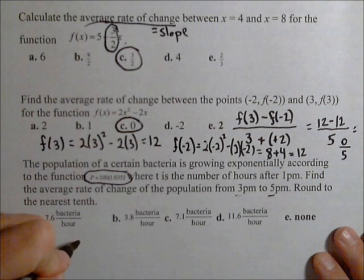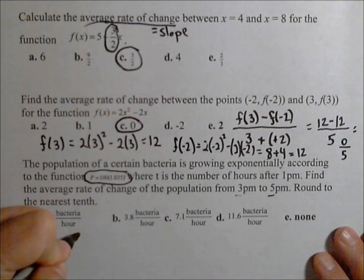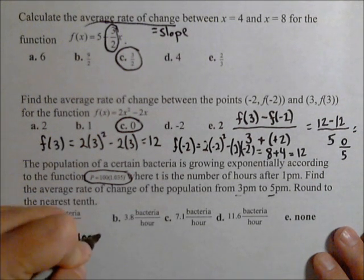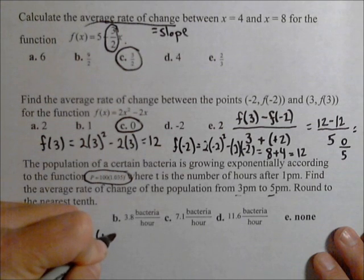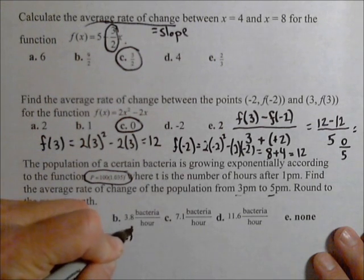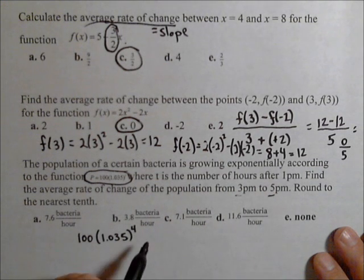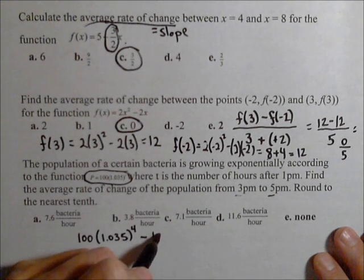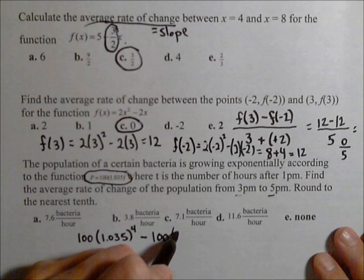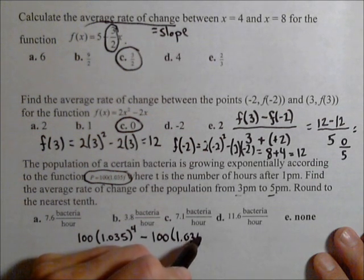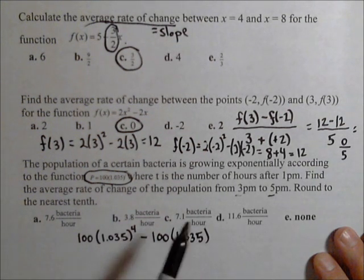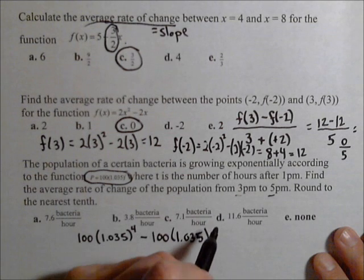So our change in output - well, our output at 5pm is going to be 100(1.035)⁴, because t is the number of hours after 1pm, minus 100(1.035)². The number of hours after 1pm that 3pm is, is 2.